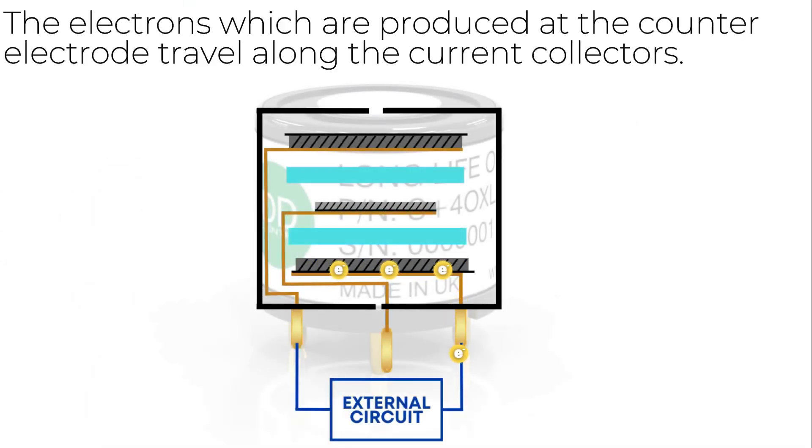The electrons which are produced at the counter electrode are able to travel through the current collector and counter pin into the external circuit and back up to the sensing electrode through the other current collector. There they are available for the sensing electrode reaction.